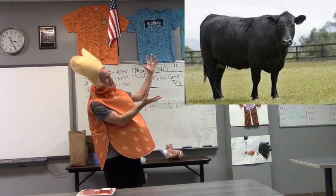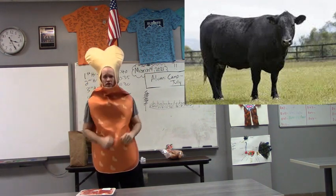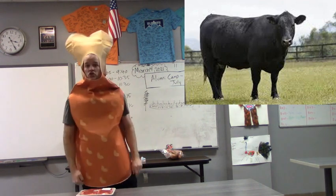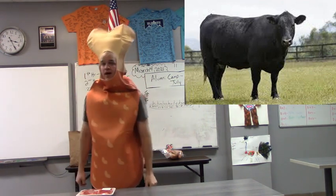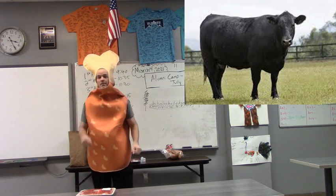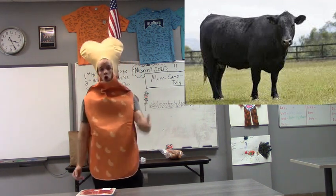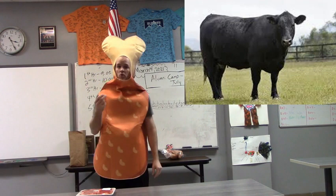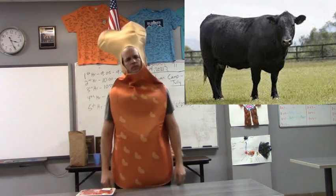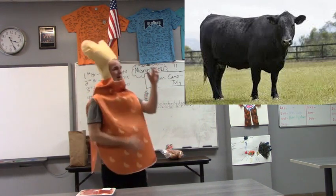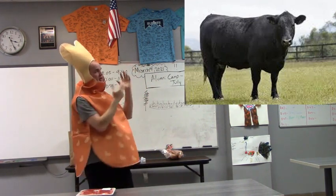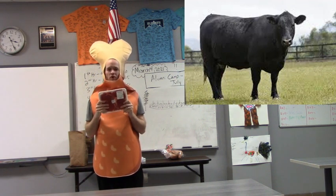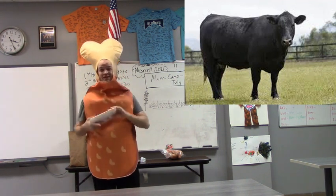As we look at Bessie the cow right here, Bessie is fixing to be butchered. When we buy Bessie the cow, we buy her by the pound. So if we sell her for $1.50 a pound and she weighs 1,000 pounds, then I'm going to buy her for $1,500. The more Bessie weighs, the more I'm going to spend. But the issue is: does every little bit of Bessie turn into edible product? The answer is no, it definitely does not.